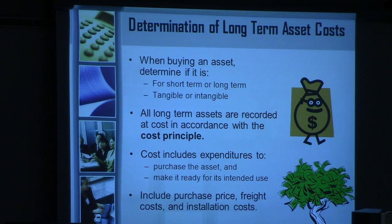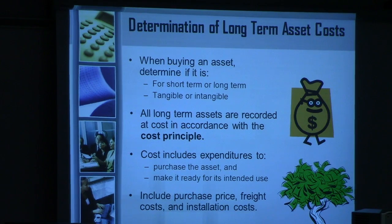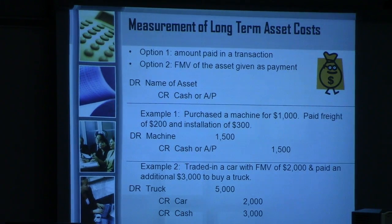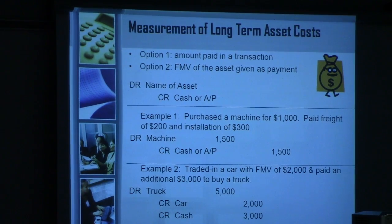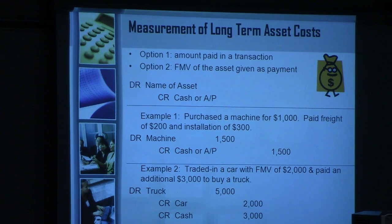Cost includes all expenditures to purchase the asset and make it ready for its use. You need to think about not just the purchase price, but also costs required to make it ready — which may include freight costs, installation costs, and similar items. For example, if you purchased a machine for $1,000, paid freight costs of $200, and installation of $300, the total is $1,500. You would debit the machine asset for $1,500 and credit cash or accounts payable for $1,500.